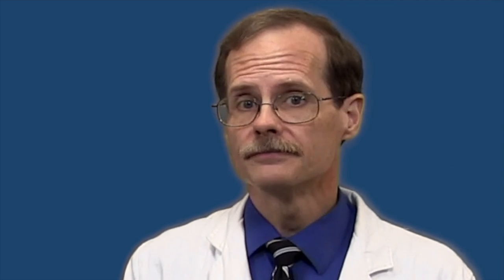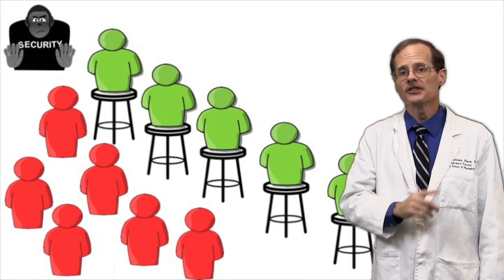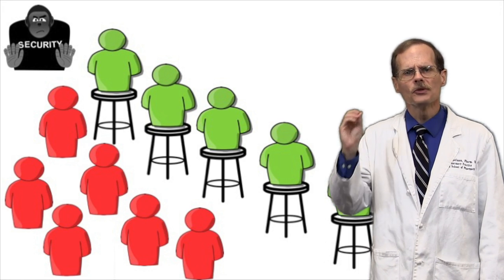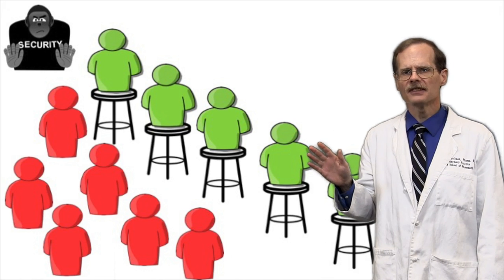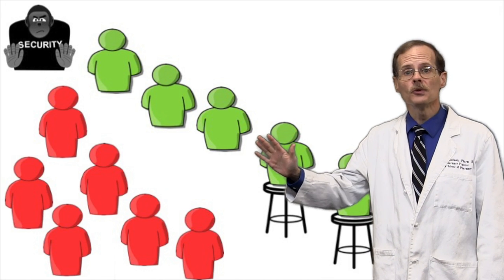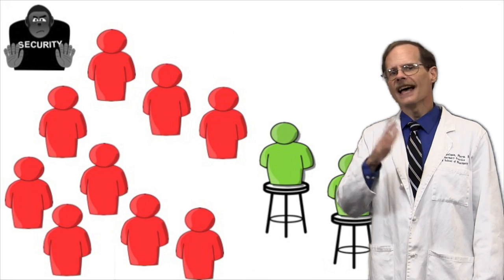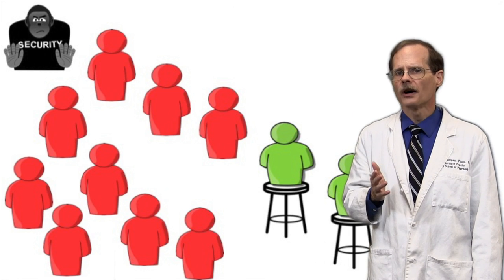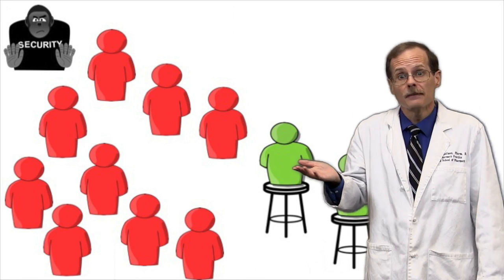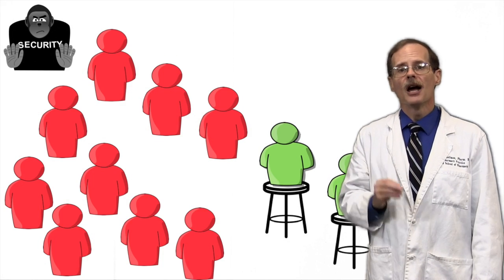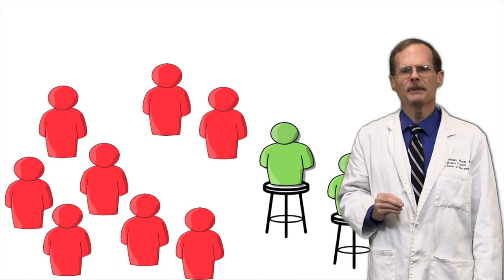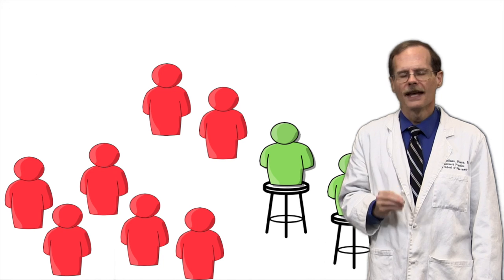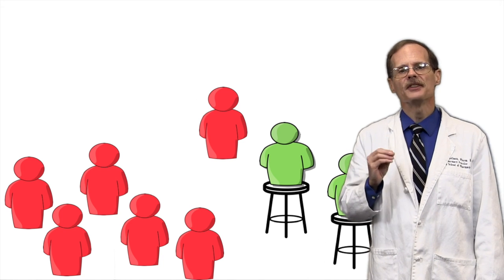What are the things that influence how quickly people or drug molecules can be removed? One thing that can change is how many stools are at the bar. Let's suppose that suddenly half the bar stools are removed from the building. Now there are relatively more people walking around because there isn't any place for them to sit. Remember, bouncers only remove people who are walking around and they leave people seated at the bar alone.